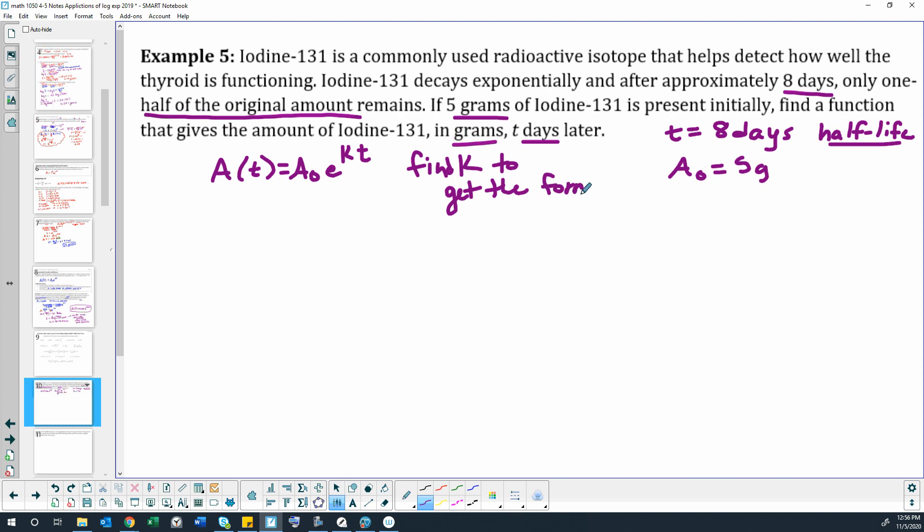We need to plug in any variables we can other than k so we can solve for k. Then when we're writing the actual formula, our function notation A of t is going to be at the beginning, and then k will be replaced with the actual number that we found, just like we did an example for.